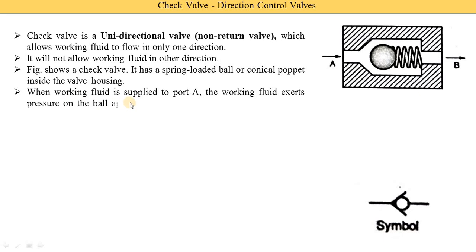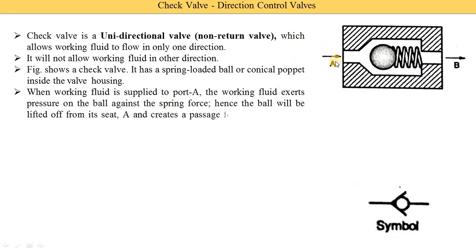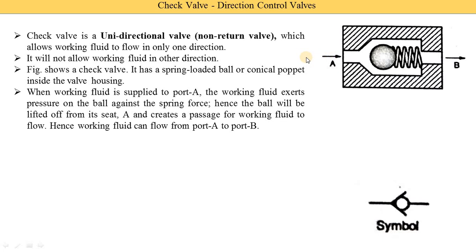When working fluid is supplied to port A, the working fluid exerts pressure on the ball against the spring force. When oil or compressed air or gas is supplied, the working fluid applies some force on the ball, the ball compresses the spring, and the ball moves away from port A due to the pressure of the working fluid. Hence, the ball is lifted off from its seat — meaning the ball moves away from the seat, which is called lifted off from its seat.